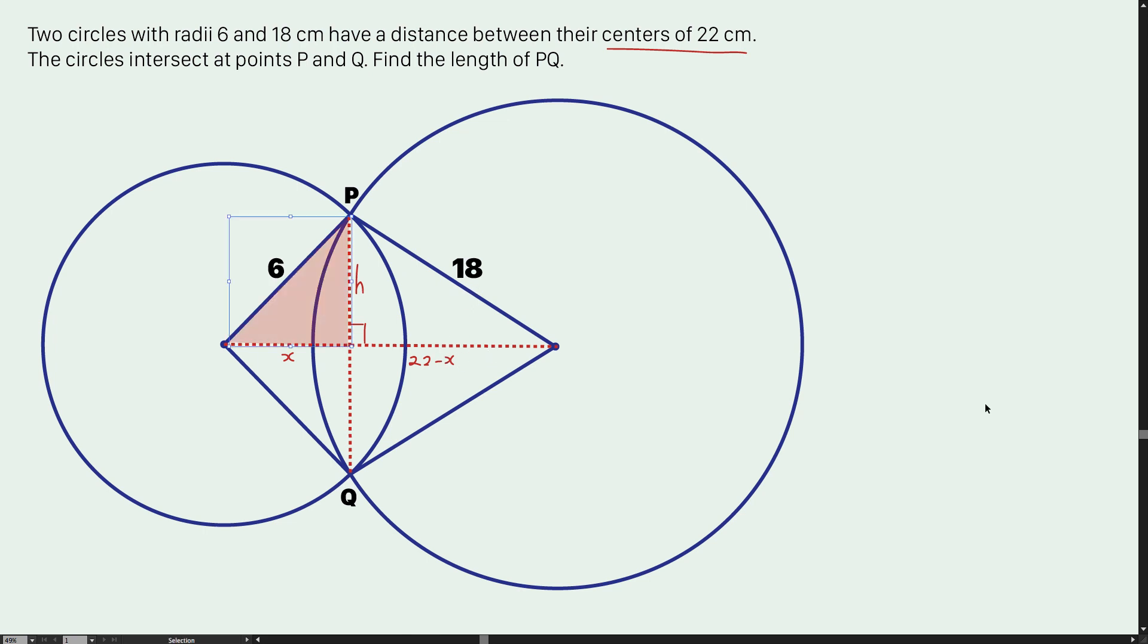Let me focus on the triangle that I'm labeling in red color. By using Pythagorean theorem, the value of h is square root of 6 squared minus x squared. Let me expand it. That turns to the square root of 36 minus x squared.